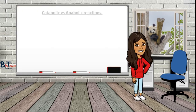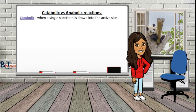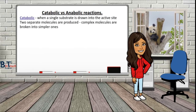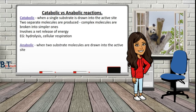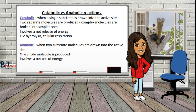Enzymes can break substrate molecules apart or join molecules together — these are known as catabolic and anabolic reactions. In catabolic reactions, a single substrate is drawn into the active site, chemical bonds are broken, and the substrate breaks apart into two separate molecules. Catabolic reactions break down complex molecules into simpler ones and involve a net release of energy; examples include hydrolysis and cellular respiration. In anabolic reactions, two substrate molecules are drawn into the active site, chemical bonds are formed, and the two molecules become one. Anabolic reactions use energy to build more complex molecules; examples include protein synthesis and photosynthesis.